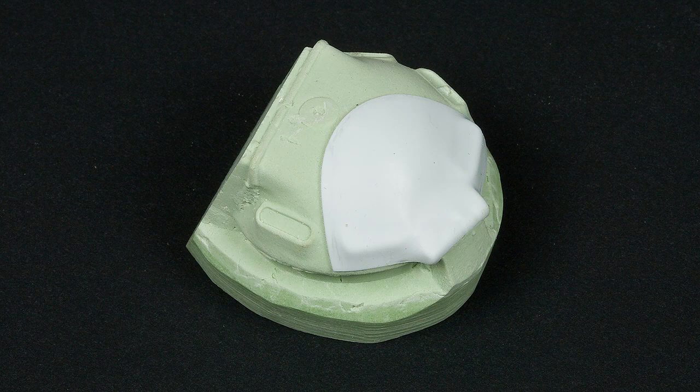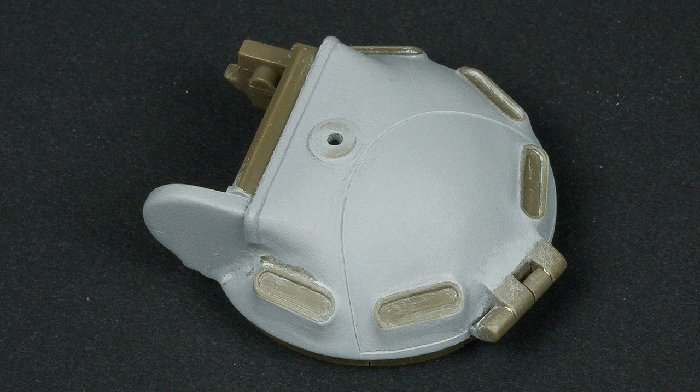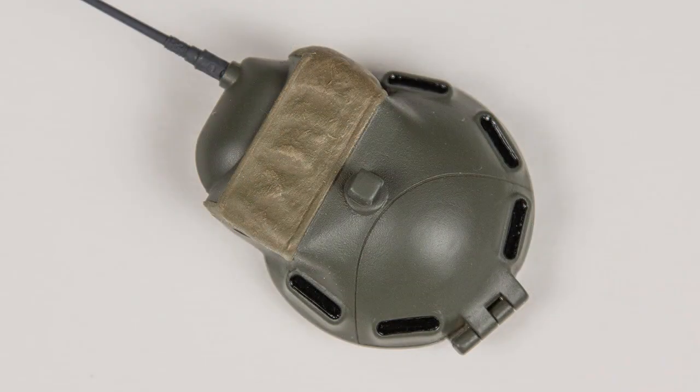Here, the same process was used to create a form so that the sheet styrene could be used as a guide for scribing the hatch and the cupola of an M48.